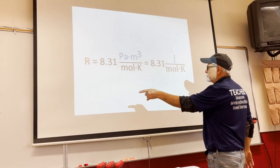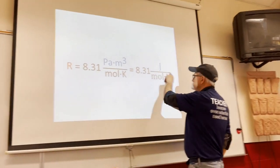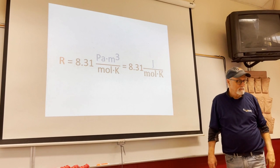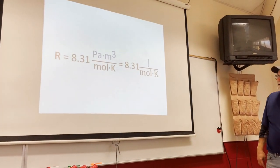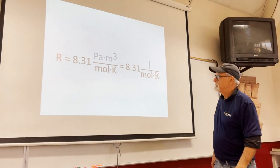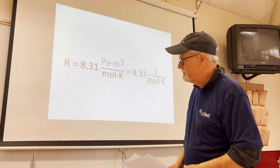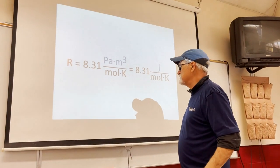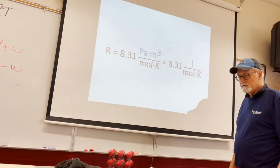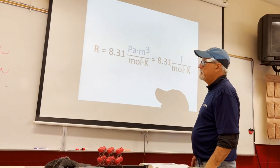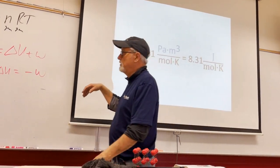That means 8.31 Pascal·cubic meters per mole·Kelvin is the same as joules per mole·Kelvin. Normally in chemistry you'd use R in Pascal units, but in physics we're looking at energy and work — pressure times volume — so joules per mole·Kelvin is the relevant form.